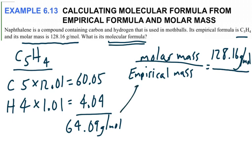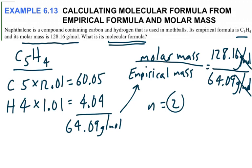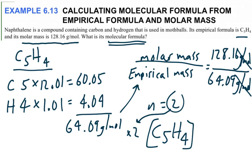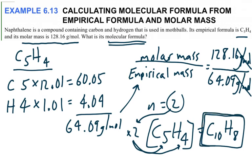That empirical mass goes on the denominator. When you find the ratio, the units cancel. 128.16 divided by 64.09 gives you the value of the ratio N, which happens to be 2. Step three says distribute the ratio to the empirical formula C5H4 through multiplication: 2 times 5 gives you 10, and 2 times 4 gives you 8. After distributing, the molecular formula of this compound is C10H8.